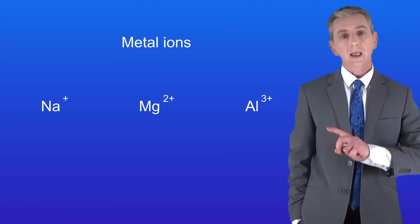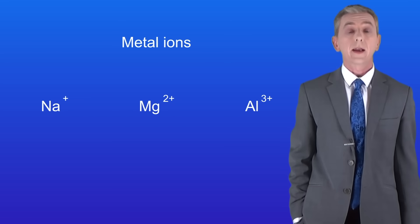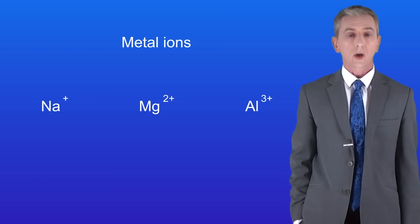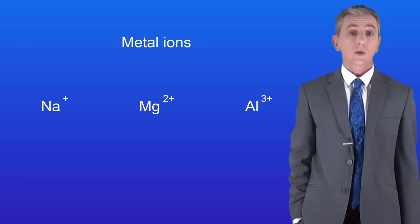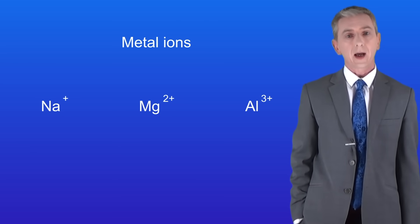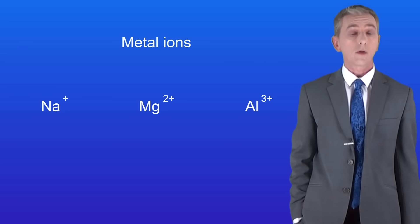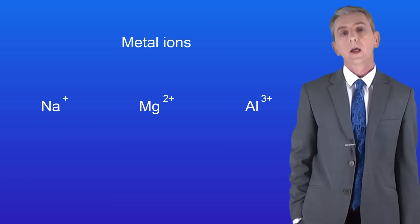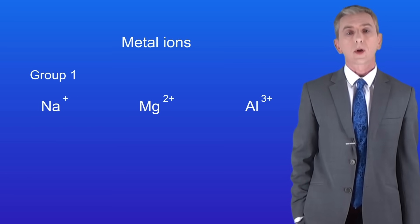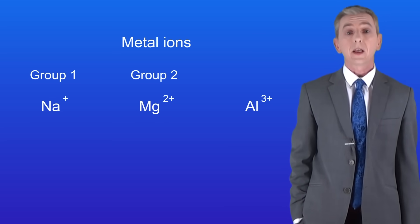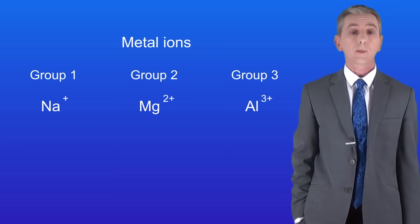I'm showing you some metal ions here. We've got Na+, Mg2+, and Al3+. The first idea that you need to understand is that the charge on a metal ion is often the same as the group number in the periodic table. So sodium is in group 1 and forms a 1+ ion, magnesium is in group 2 and forms a 2+ ion, and aluminium is in group 3 and that forms a 3+ ion.